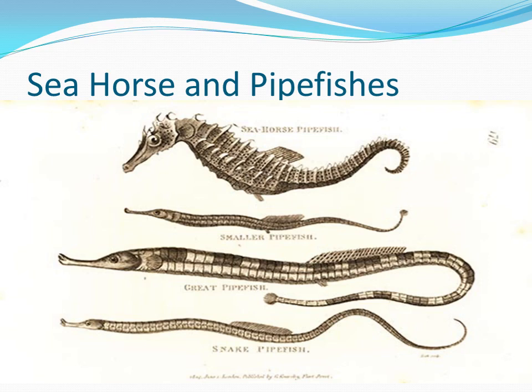The male seahorse is equipped with a pouch on the ventral or front-facing side of the tail. When mating, the female seahorse deposits up to 1,500 eggs in the male's pouch. The male carries the eggs for 9 to 45 days until the seahorses emerge fully developed but very small. The young are then released into the water, and the male often mates again within hours or days during the breeding season.